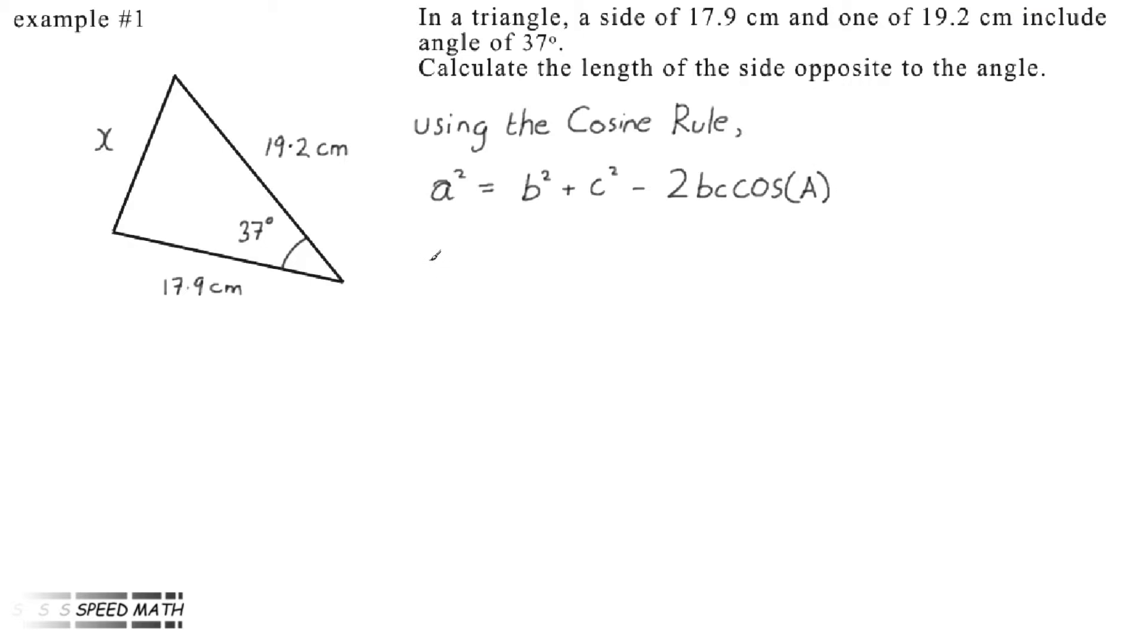If we now substitute in the values, we get x² equals (19.2)² plus (17.9)² minus 2 times 19.2 times 17.9 multiplied by cos(37°).